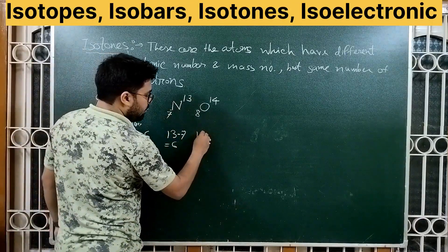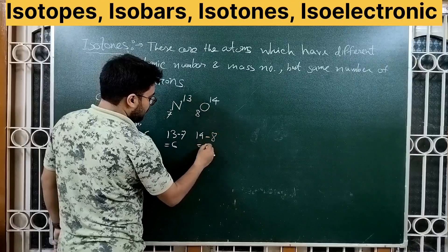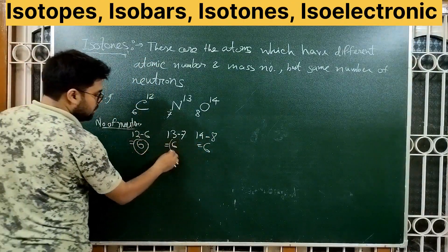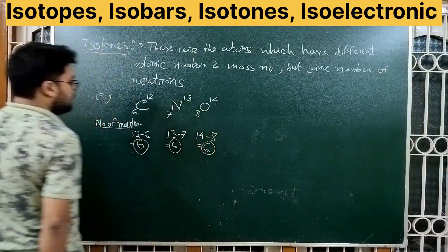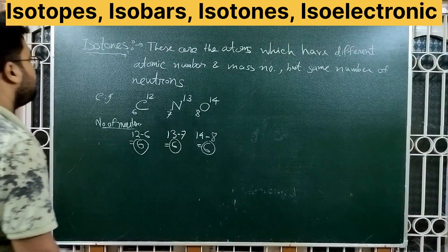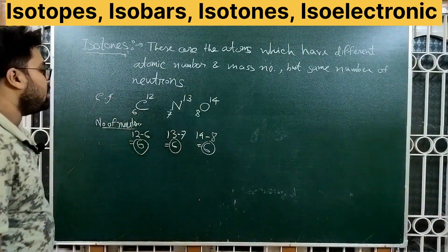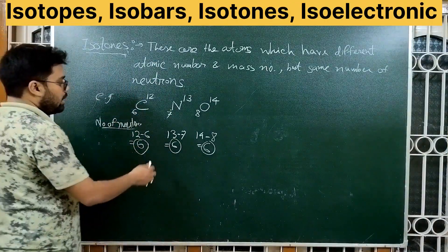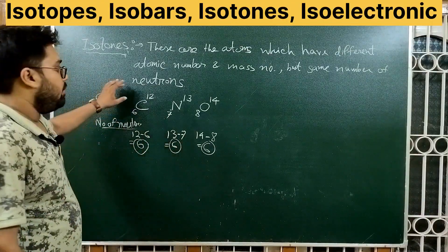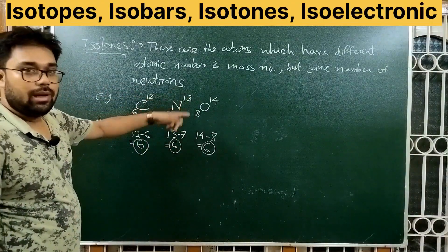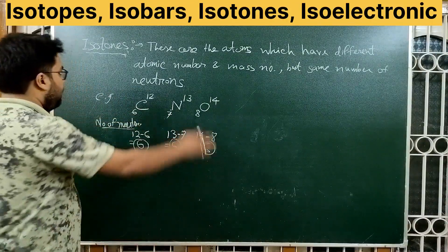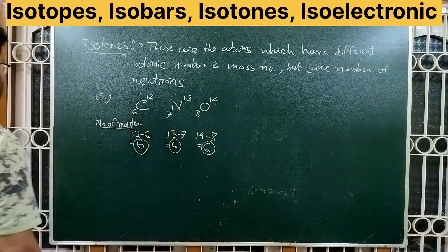For isotones, let's verify: 14 minus 8 equals 6; that gives 6 neutrons. Carbon-14 minus its 8 protons equals 6 neutrons. So the number of neutrons is equal — that is the key property of isotones.